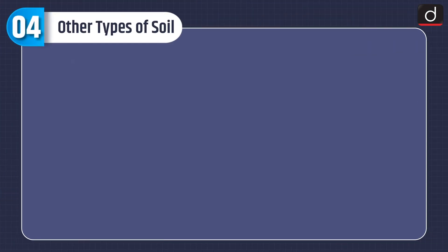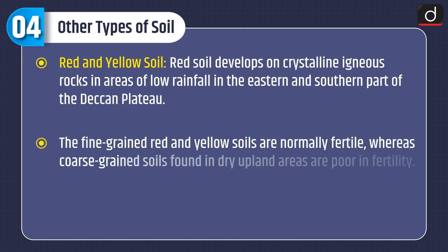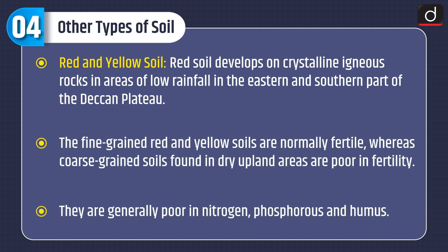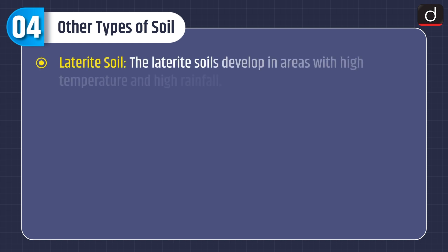Now let's look at some other types of soil. Red soil develops on crystalline igneous rocks in areas of low rainfall in the eastern and southern part of the Deccan plateau. The fine-grained red and yellow soils are normally fertile, whereas coarse-grained soils found in dry upland areas are poor in fertility. They are generally poor in nitrogen, phosphorus and humus.